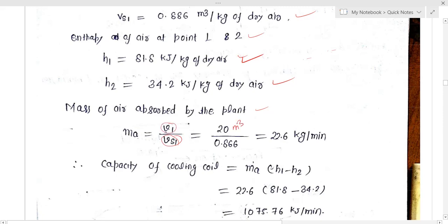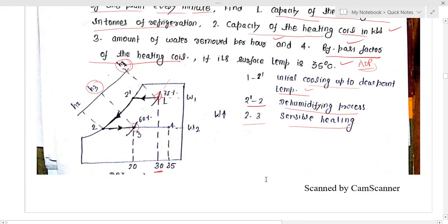Calculate the mass of air circulated per minute: m_a = volume flow / specific volume = 20 / 0.886 = 22.6 kg per minute. The total cooling process covers the entire 1-to-2 process, which includes both initial sensible cooling and dehumidification.